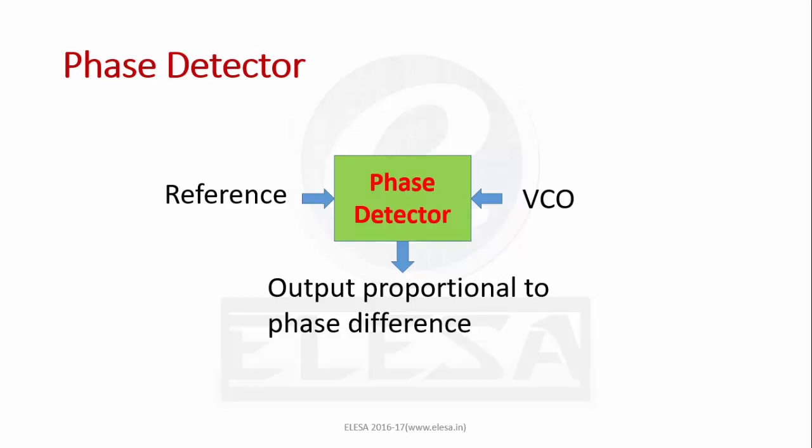As the name suggests, phase detector detects the phase of a signal with respect to reference and produces output proportional to the phase difference. If phase difference remains constant, then frequencies of two signals match with each other.